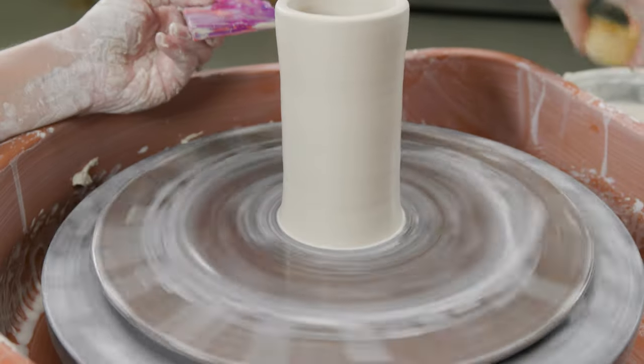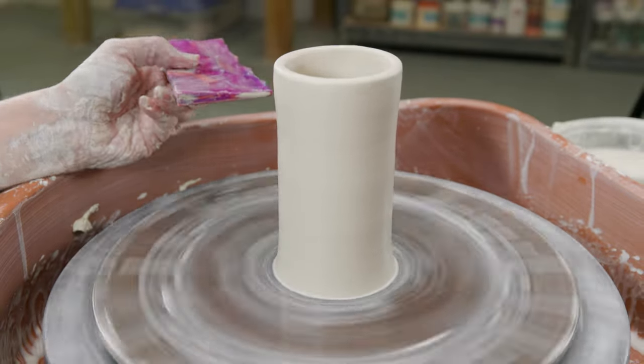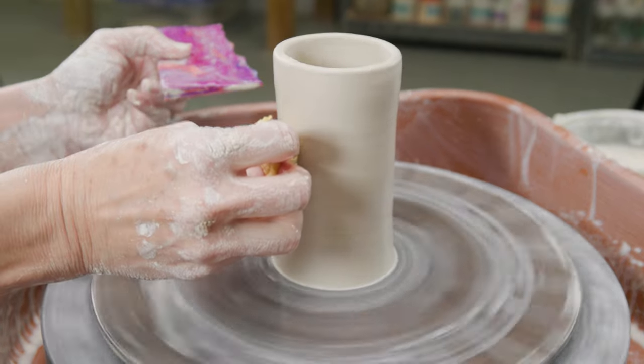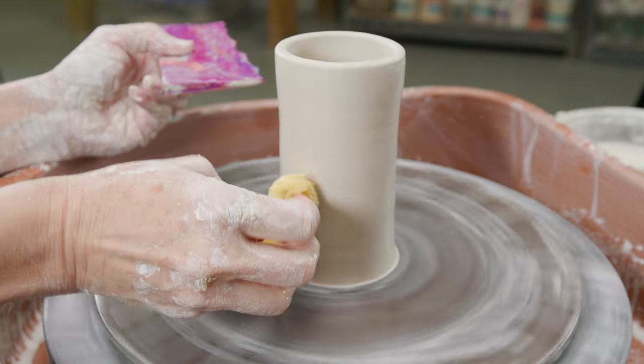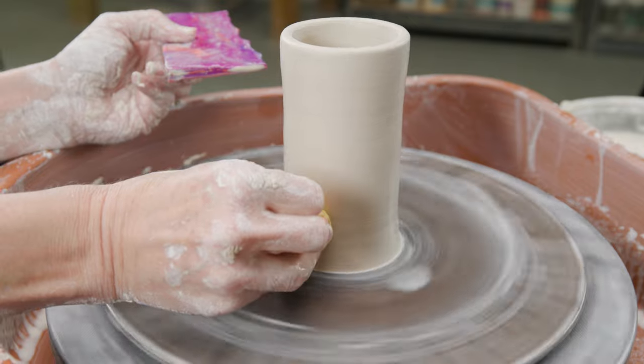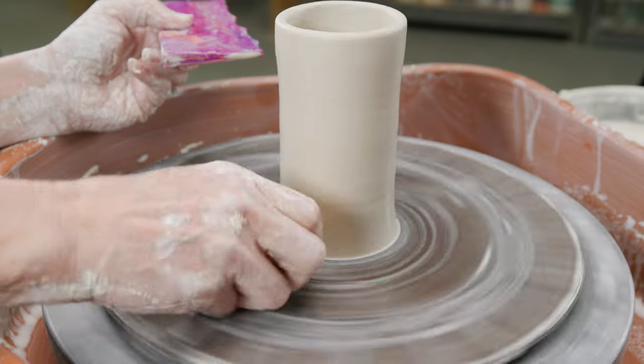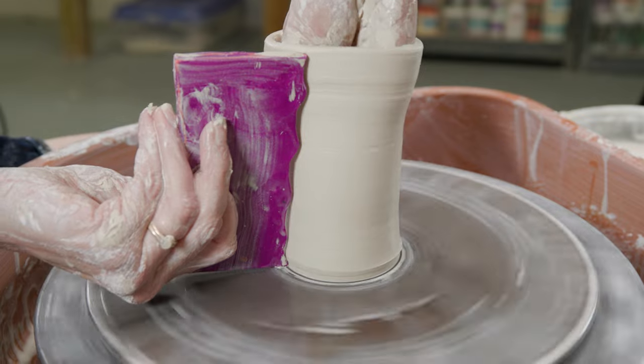Now I'm going to use a rib that I made earlier and see if this works. I threw a thin cylinder. I wet the clay and flooded the bat with a wet sponge to avoid friction. I then pushed the clay outward against the contour of the rib.